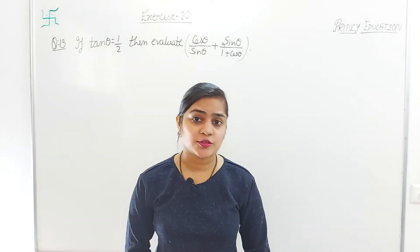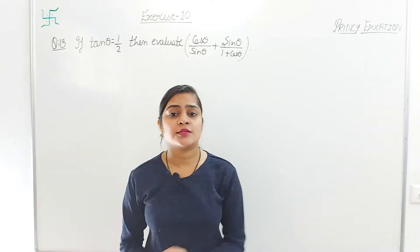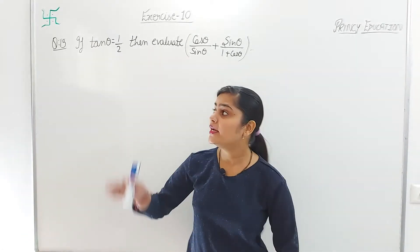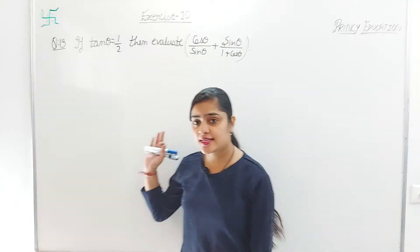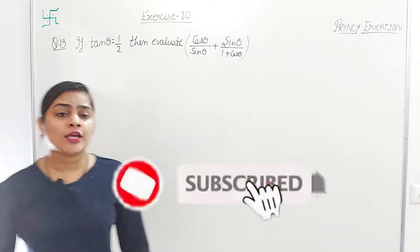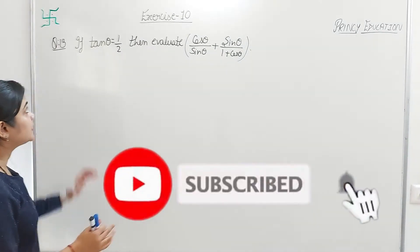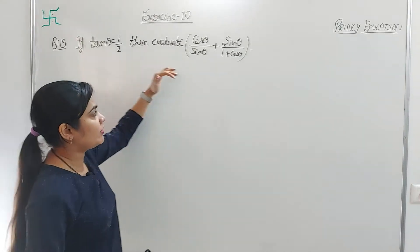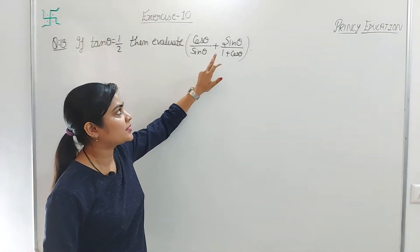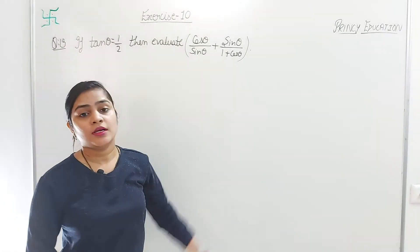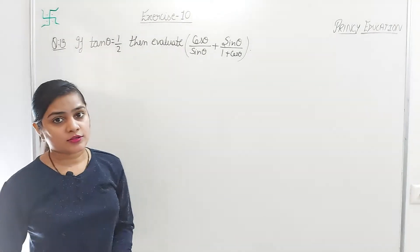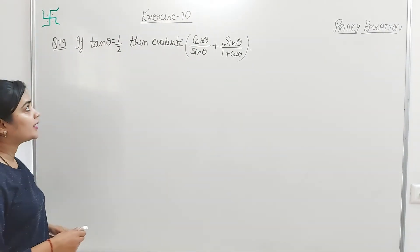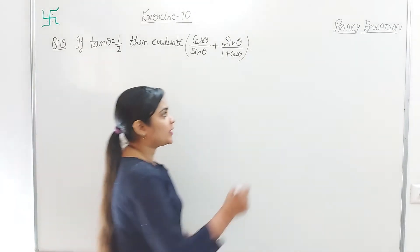Hello everyone, welcome to Prince Education channel. Today we will do class exercise chapter 10, question number 13 and 14. Question number 13: if tan θ equals 1/2, then evaluate cos θ upon sin θ plus sin θ upon 1 plus cos θ. You have to find this value given that tan θ equals 1/2.